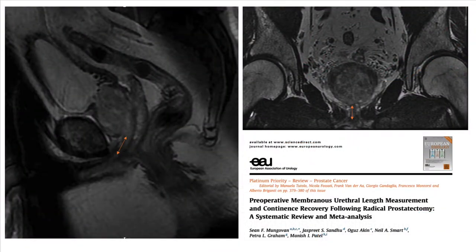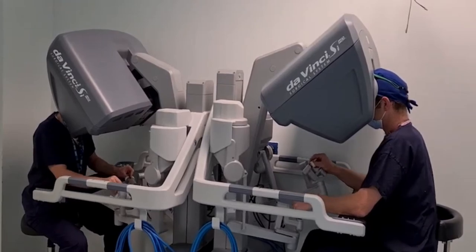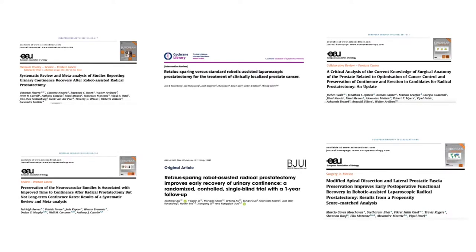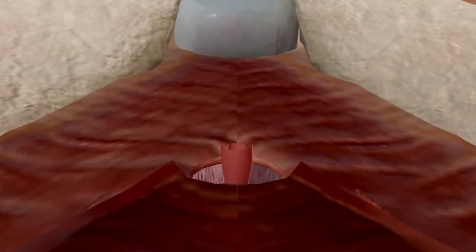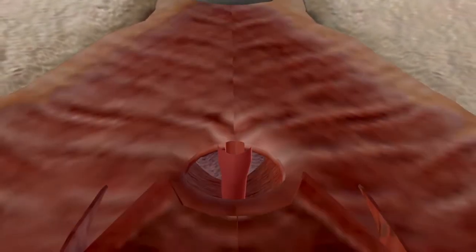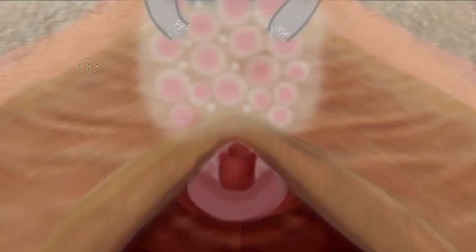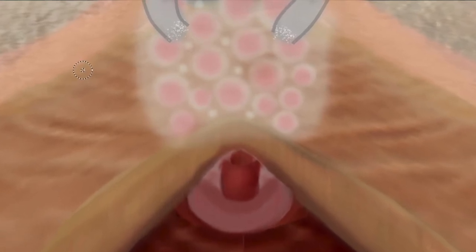Preoperative membranous residual length is a well-known non-modifiable factor predicting continent recovery after surgery. There are also refinements in surgical techniques while approaching the apex and the urethra to optimize continence after robotic assisted radical prostatectomy. These include maximizing the urethral length and preserving periurethral structures responsible for urethral stability, including fascial components within the dorsal venous complex, puboprostatic ligaments, and endopelvic fascia.